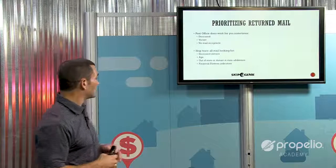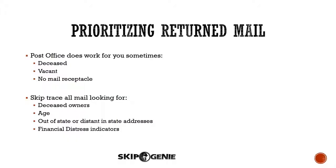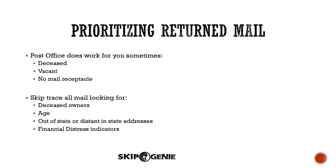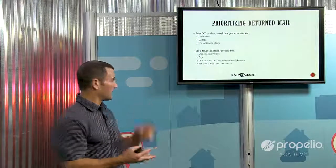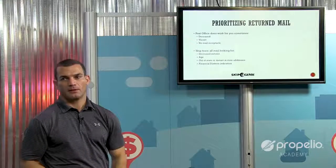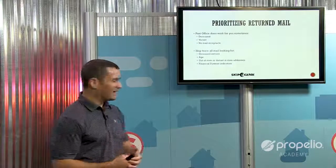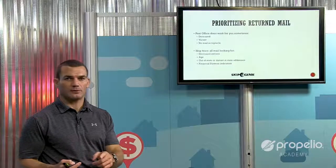Those confirmed vacant or deceased pieces — identified by the post office — should be your top priorities above all other leads. If it's a good list, I would still skip trace the rest of the mail, but specifically look for newly deceased owners the post office may not have flagged. Also look at the age of the owner, check address history to see if there's a more current address showing the owner is now out of state or across the state, and as always look at financial distress indicators — bankruptcies, liens, or judgments.